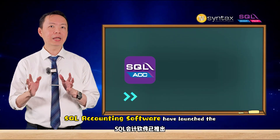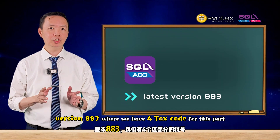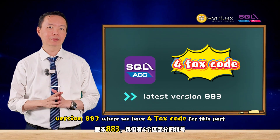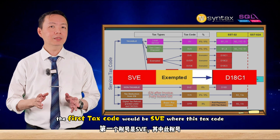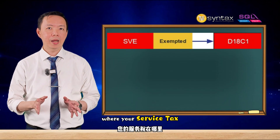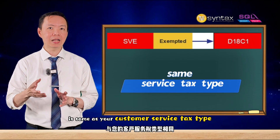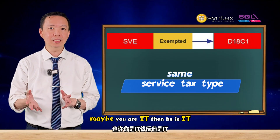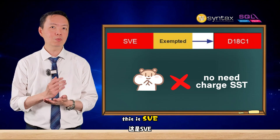Because of that, SQL Accounting Software has launched the latest version, version 883, where we have four tax codes for this part. The first tax code will be SVE, where this tax code is used for 18c1, where your service tax type is the same as your customer's service tax type. Maybe you are IT, then your customer is also IT. So when you invoice them, you do not need to charge SST. This is SVE.